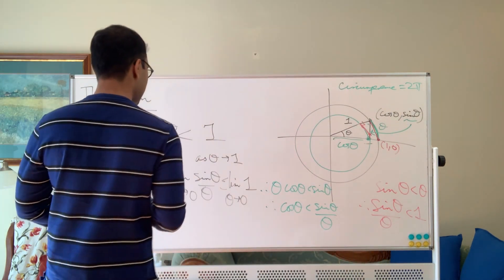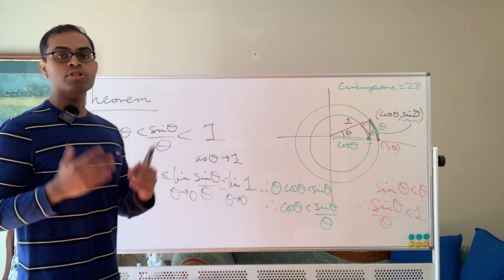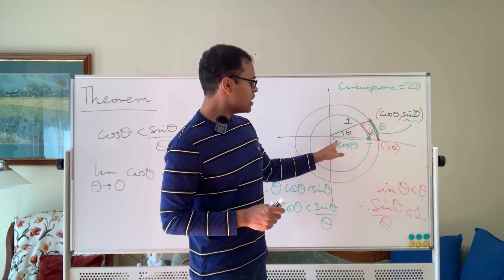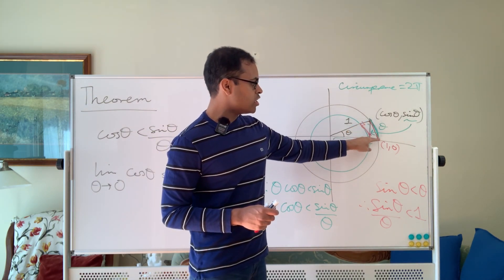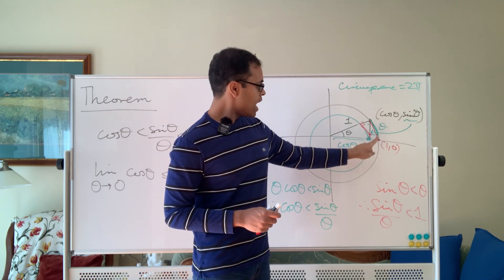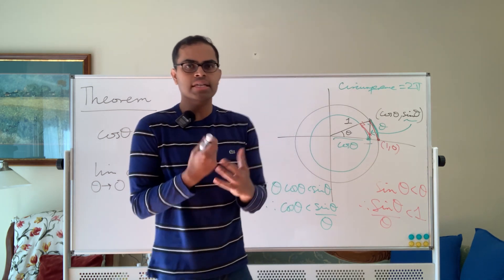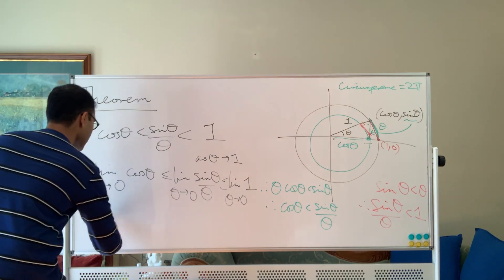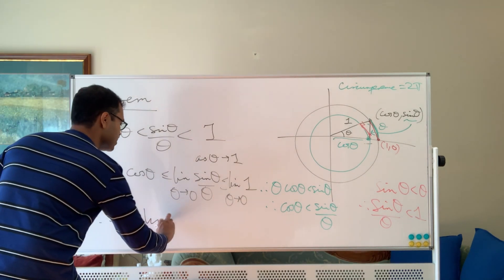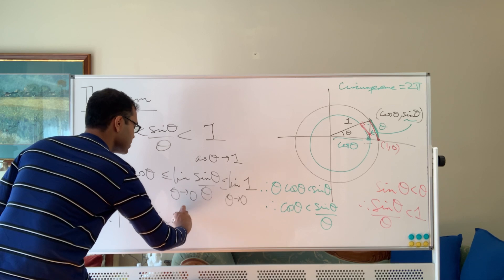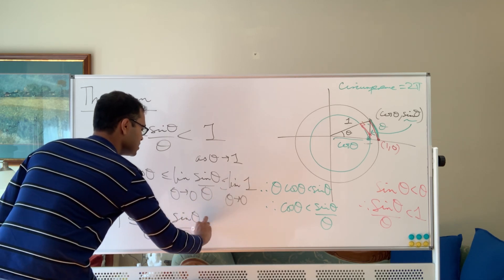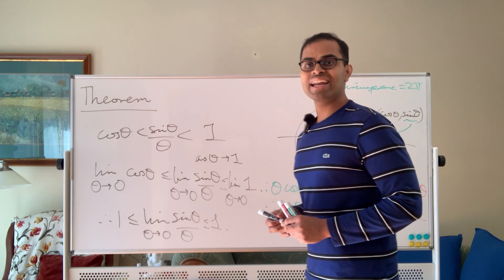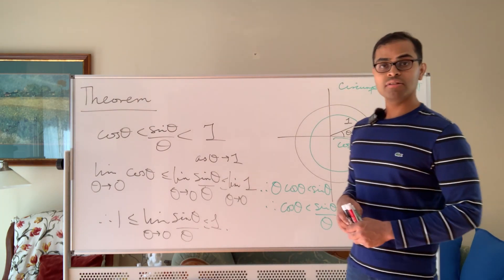Cosine theta as theta approaches 0 is 1 — you can even see it from this figure. As theta approaches 0, this point approaches 1, 0, and we know cosine 0 is 1. Cosine is a continuous function. So we get that 1 is less than or equal to the limit as theta approaches 0 of sine theta over theta, which is less than or equal to 1. And of course, if a number is greater than or equal to 1 and less than or equal to 1, it has to equal 1. So that concludes the proof of the theorem.